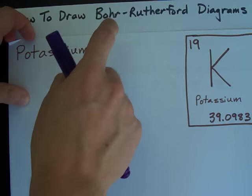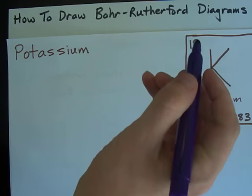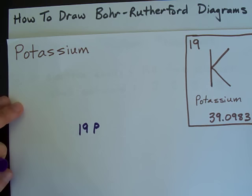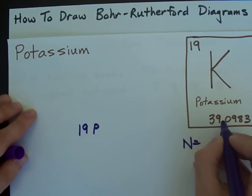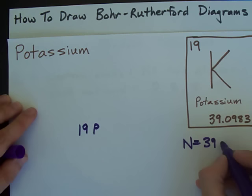First things first when you're drawing Bohr-Rutherford Diagrams, how many protons and neutrons do you have? Well, 19 protons, because that's the atomic number of the element. How many neutrons? The answer is the atomic weight, which in this case is about 39, minus the number of protons.